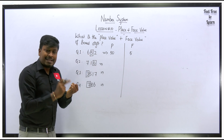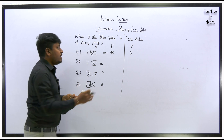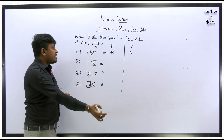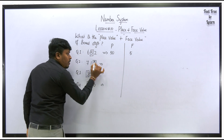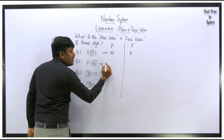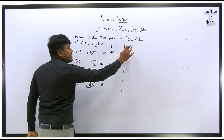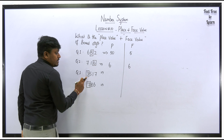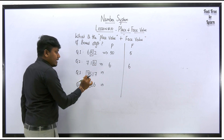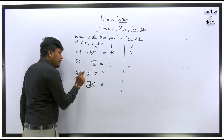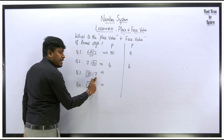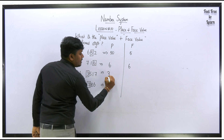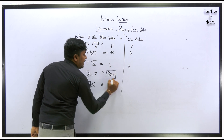Place value: you have to see the position — whether it is at tens, hundreds, thousands place — and multiply by that position. Question 2: for the number 716, the boxed digit is 6. Digit 6 is at the ones place, so 6 into 1 equals 6 — place value is 6. Face value of 6 is 6 itself. Question 3: for the number 3517, find the place value of digit 3. Digit 7 is at ones, then tens, then hundreds, so digit 3 is at the thousands place. Therefore 3 into 1000 equals 3000 — place value is 3000.